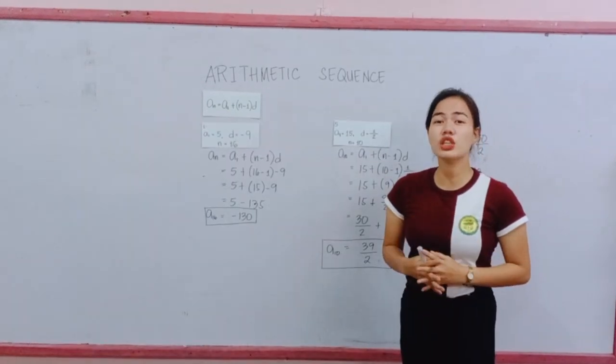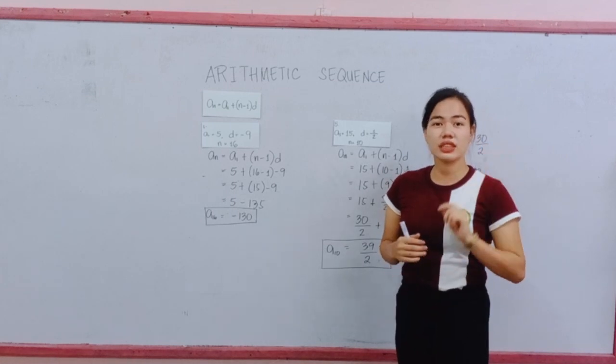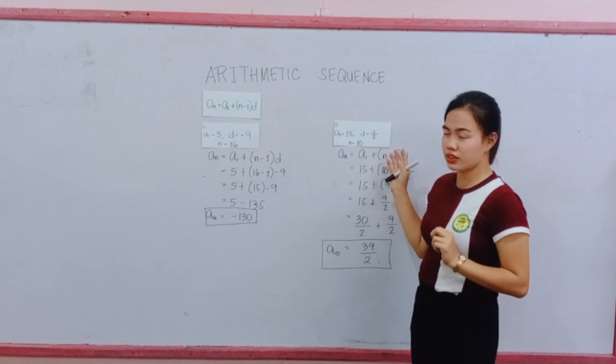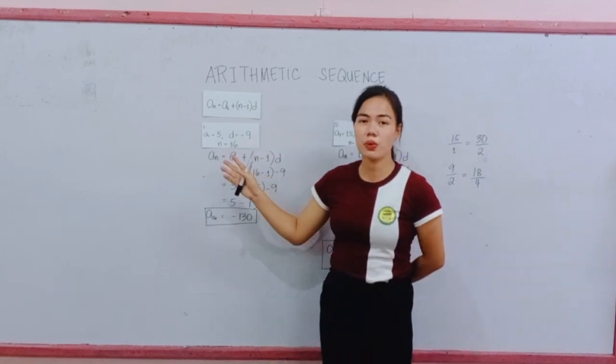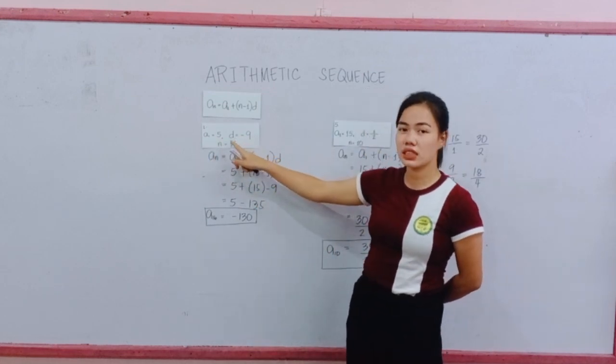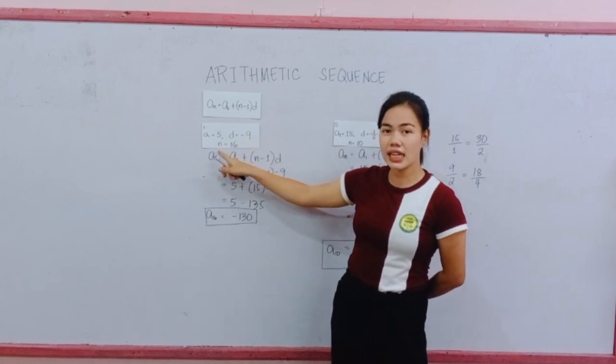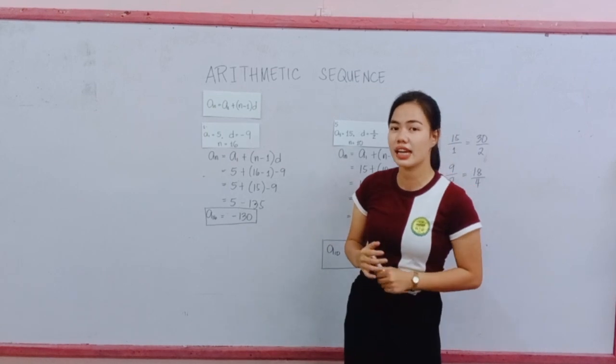In Module 2, I gave you 5 questions, but today I will give you 2 of the answers. Number 1 and number 5. For number 1, our first term is 5. Our D or common difference is negative 9. Our N is 16. So find the last term.